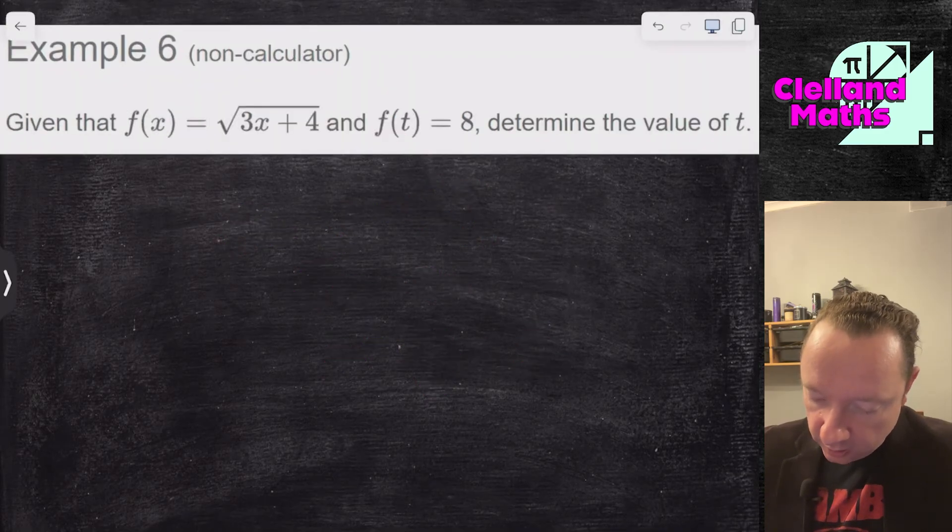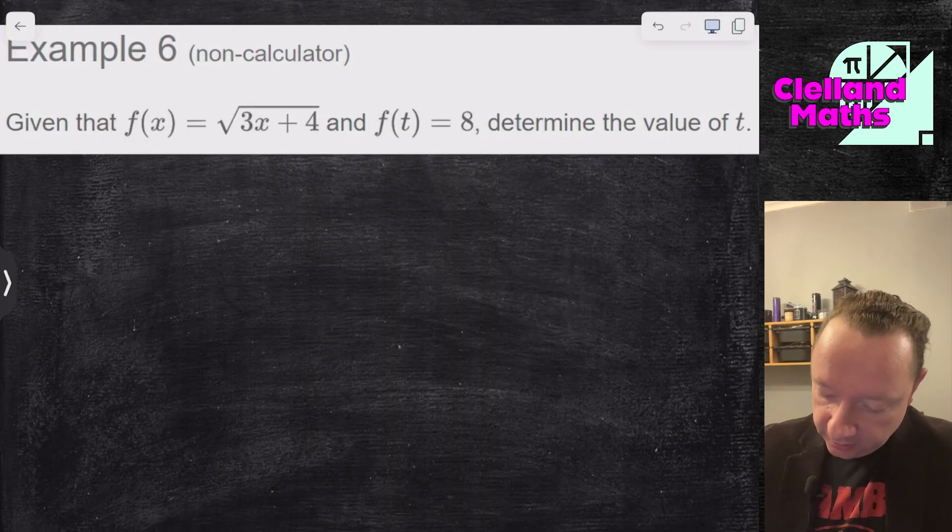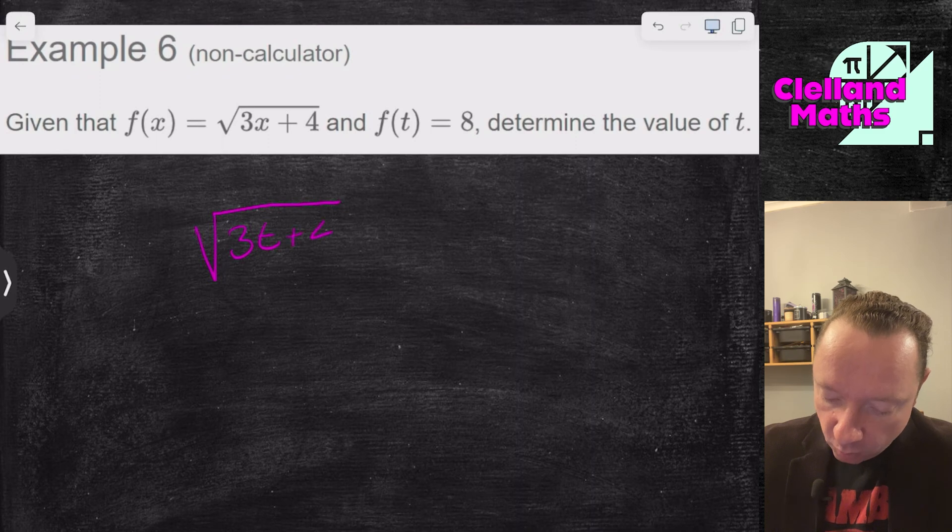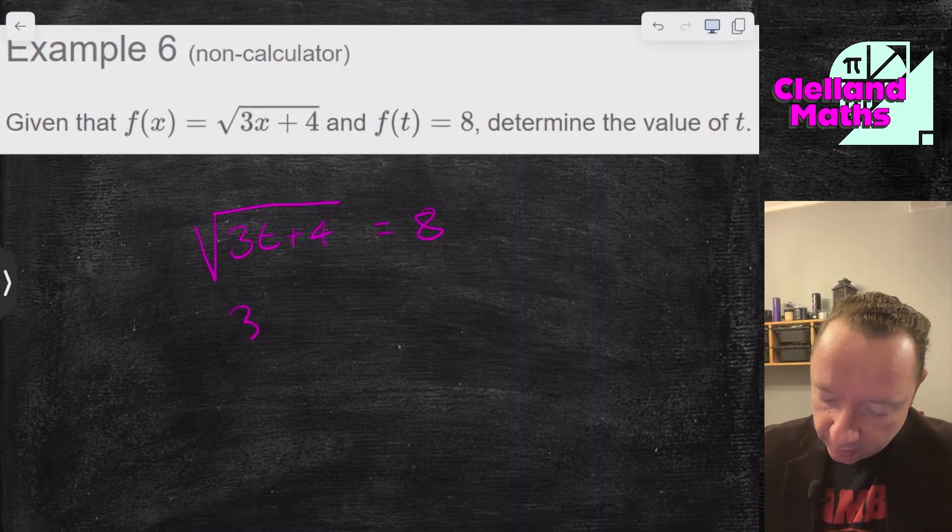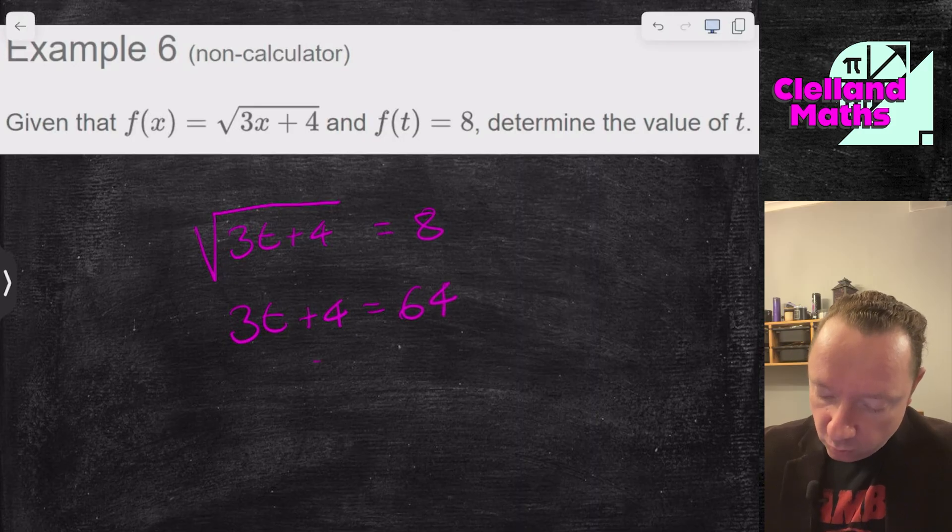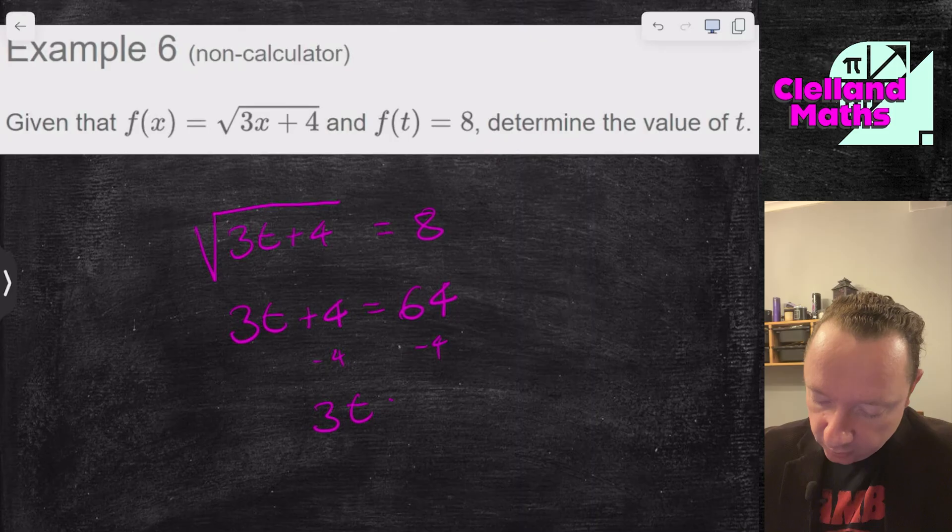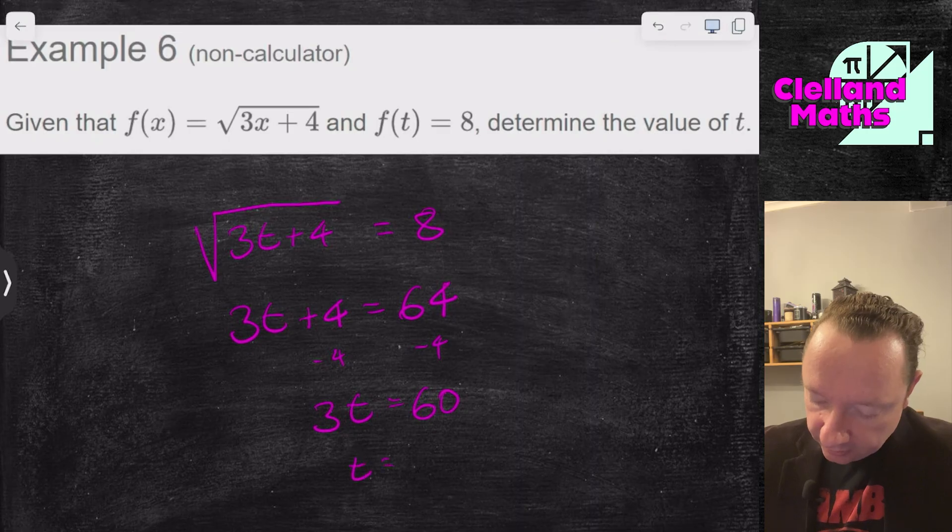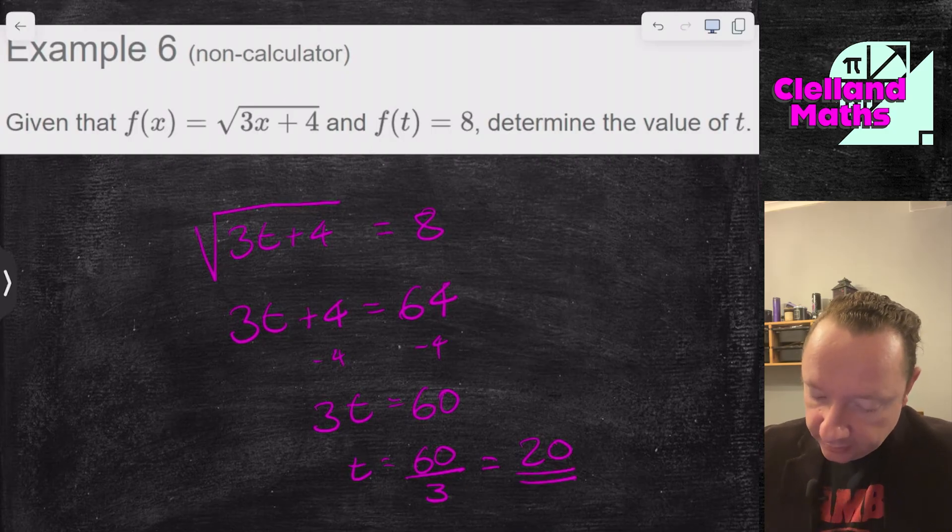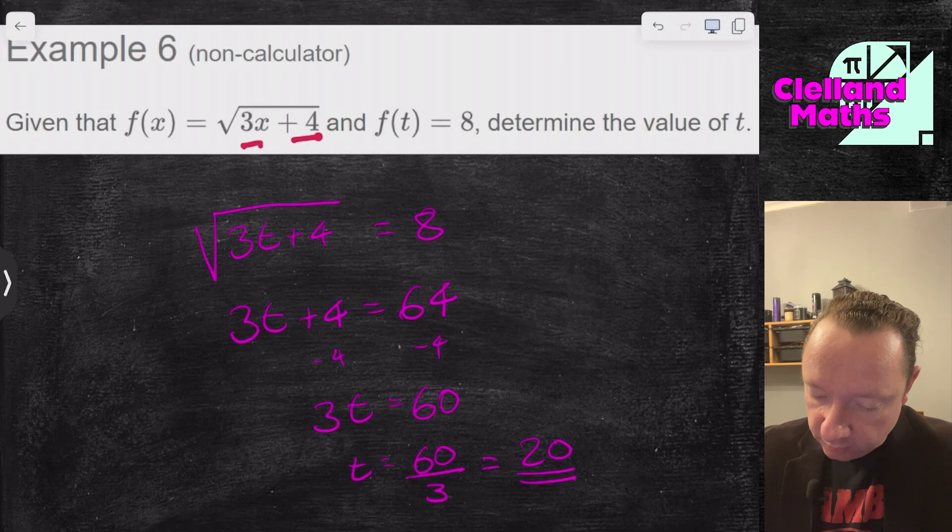f of x is the square root of 3x plus 4. And f of t equals 8. So find t. So again, we're replacing x with t. I've got the square root of 3t plus 4. The whole thing equals 8. Well, to get rid of the square root, I'm going to square both sides. So that gives me 3t plus 4 equals 64. Now I can take away 4 from both sides to get 3t equals 60. And then t is 60 divided by 3, which of course is 20. Check your answer. 3 times 20 is 60 plus 4 is 64. If you square root 64, you get back to 8, which is what I'm looking for.